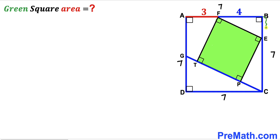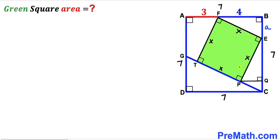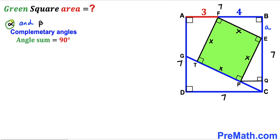I'm going to label one leg of triangle EFB as lowercase a, and the side length of the green square as X units. Since EFTP is a square, all its sides are X. In the next step, I drop a perpendicular PQ onto side BC, and we assume alpha and beta are two complementary angles — meaning alpha plus beta equals 90 degrees. Now let's focus on right triangle EFB.